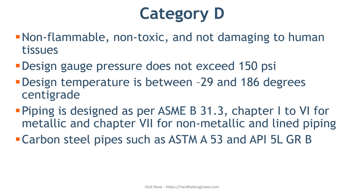The third condition is design temperature. The design temperature is between minus 29 to 186 degrees centigrade for this service, so this service handles moderate temperatures. Most utility lines such as water, air, etc. fall under this type of fluid service. Piping is designed as per ASME B31.3 chapter 1 to chapter 6 for metallic, and chapter 7 for non-metallic and lined piping. Normally, carbon steel pipes such as ASTM A53 and API 5L Grade B are used, and it may be galvanized or painted.